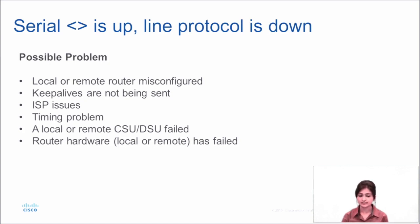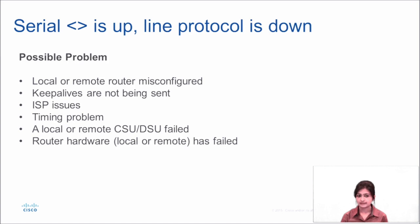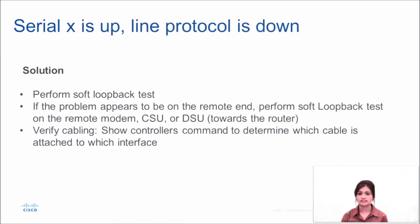If you issue 'show interface serial' and see your serial interface is up but line protocol is down, the possible problem could be that your local or remote router is misconfigured, keepalives are not being sent, it could be an ISP issue, a clocking issue, or your local or remote CSU/DSU has failed — or it could be a hardware issue. Here we perform the same steps: software loopback test on our device first, then ask ISP to perform a software loopback test on their end, and third, perform a hard plug loopback test. We can also verify cabling by issuing 'show controller' to check which cable is attached to which interface.